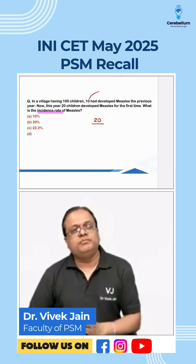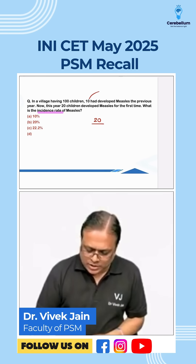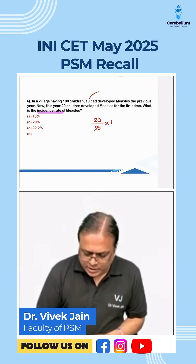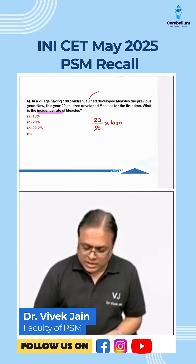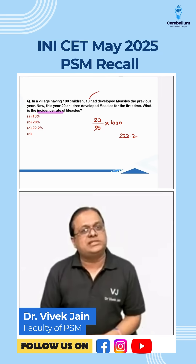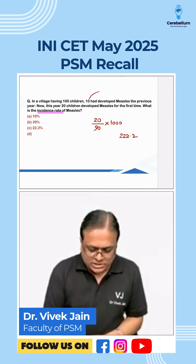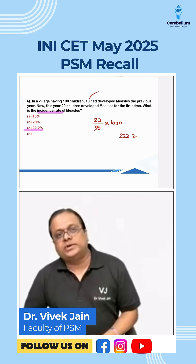10 had already developed measles earlier, meaning they were no longer susceptible, so 90 were susceptible. It is calculated per thousand, which gives 22.2 — but since they asked in percentage, the answer is 22.2 percent.